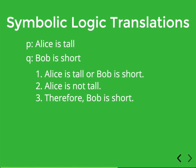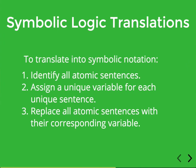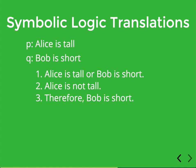Let's apply this to an example argument. Sentence one: 'Alice is tall or Bob is short.' Sentence two: 'Alice is not tall.' Conclusion: 'Therefore, Bob is short.' The two atomic sentences here are 'Alice is tall' (assigned P) and 'Bob is short' (assigned Q). You also have to provide a key which maps the variables to the actual sentences they stand in for.